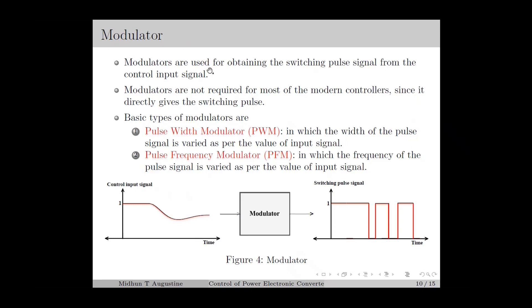Modulators are used for obtaining the switching pulse signal from the control input signal. The switching pulse signal is used for driving the switch position, where 1 corresponds to the ON state and 0 corresponds to the OFF state. The output of the controller is usually a continuous signal, and we use the modulator circuit to convert this control input signal into a switching pulse signal. Modulators are usually not required for many modern controllers since they can directly give the switching pulse signal. The basic types of modulators are the pulse-width modulator, in which the width of the switching pulse is varied according to the input signal value, and the pulse-frequency modulator, in which the frequency of the pulse signal is varied according to the input signal value.